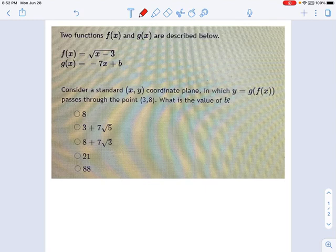So in this question, it gives us two functions, f of x and g of x, and it describes them below. You can see f is a square root equation, and g is a linear equation, negative 7x plus b.